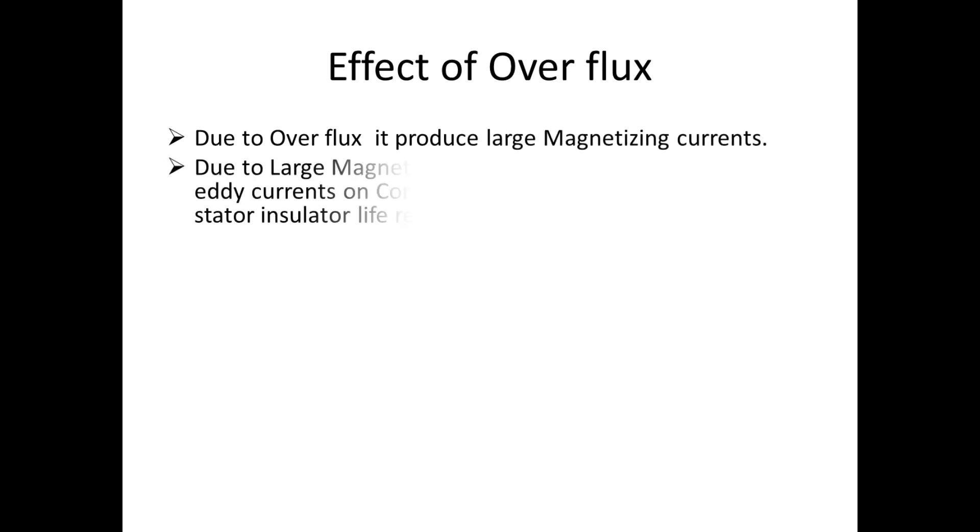Next, we are going to see the effect of over flux on generator. Due to over flux, it produces large magnetizing current. Due to this large magnetizing current, it produces hysteresis and eddy current over the core.